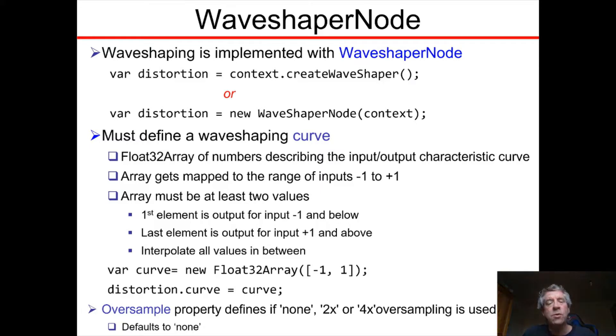So the very first element of the array corresponds to the input of -1 or anything less than that, and the very last element corresponds to the input +1 and anything beyond that. All values in between are simply interpolated from one array element to the next array element.